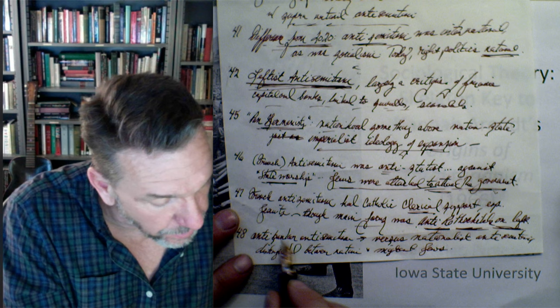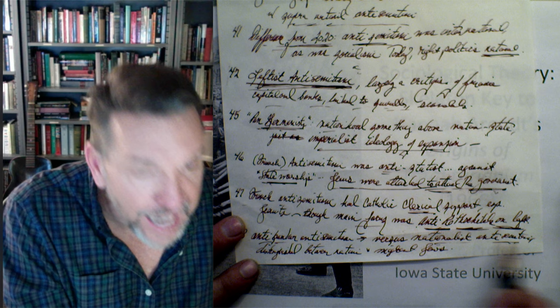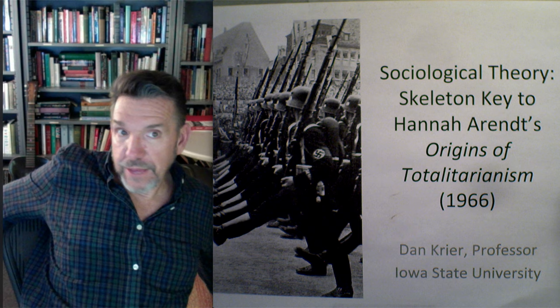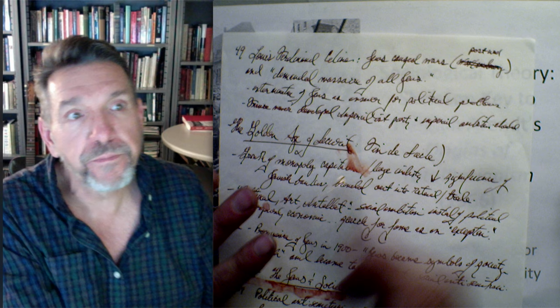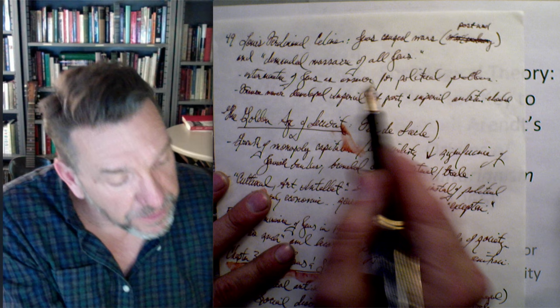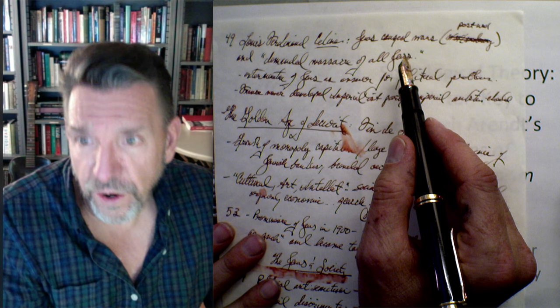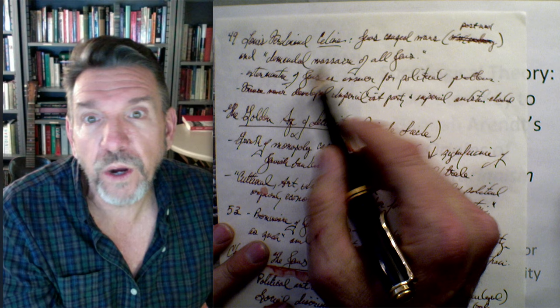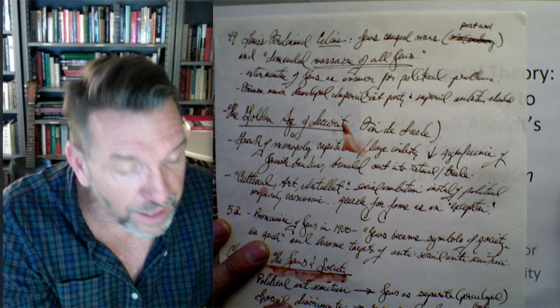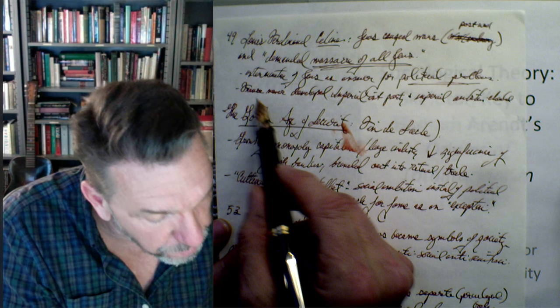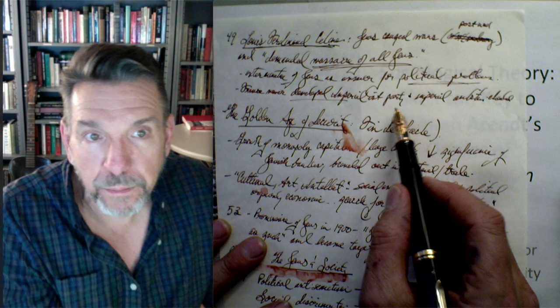Page 48: anti-banker antisemitism is augmented by nationalist antisemitism. There were groups that distinguished between native and foreign Jews — what she calls nationalist antisemitism — but when totalitarianism gets going, it obliterates that distinction. Page 49: she writes about Céline, an ideologue who argued that Jews caused wars — after World War I — and demanded the massacre of all Jews. This is the emergence of an anti-state international movement to exterminate Jewish people everywhere. France never developed an imperialist party, and she thinks that's one reason Céline's antisemitic screeds didn't catch fire.